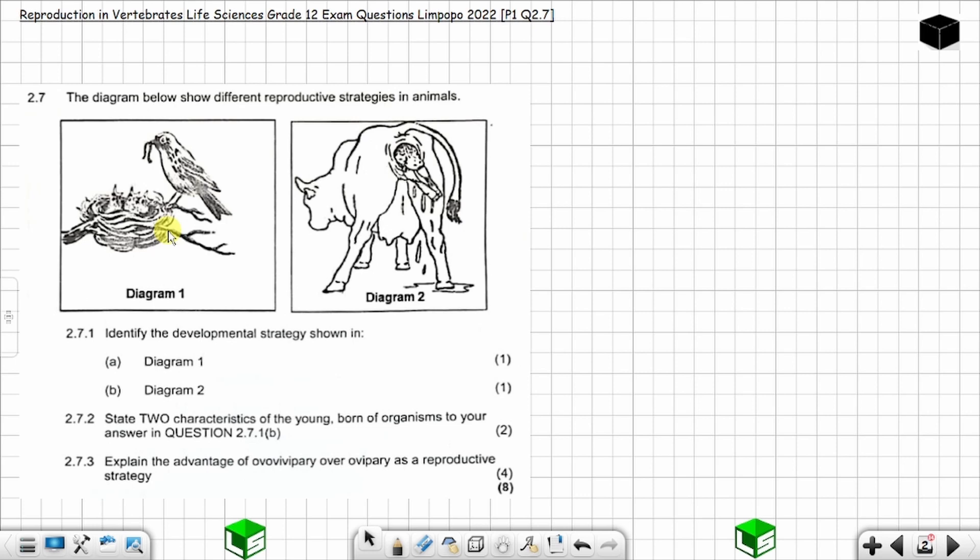You have Diagram 1, you have a bird and the chicks in the nest, and Diagram 2, you have a cow giving birth to a baby cow. Now question 2.7.1: identify the developmental strategy shown in (a) Diagram 1 and (b) Diagram 2. One mark for each question.